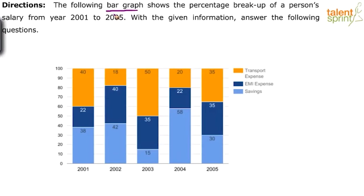First, get to know what exactly can be extracted from the given graph. What values, what type of values can be calculated? Once you are clear with the data, then proceed to the questions. So here the bar graph shows the percentage breakup of a person's salary from the year 2001 to 2005.